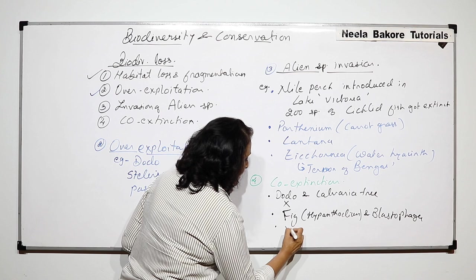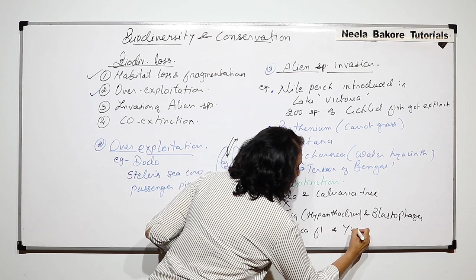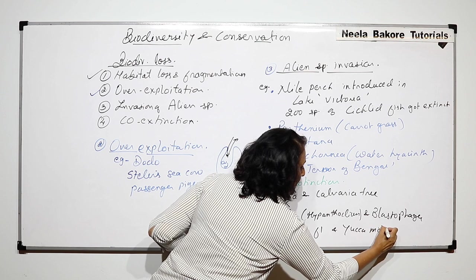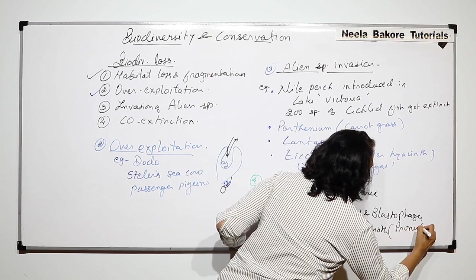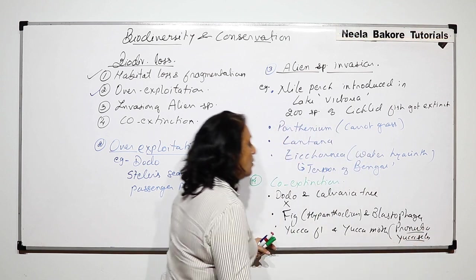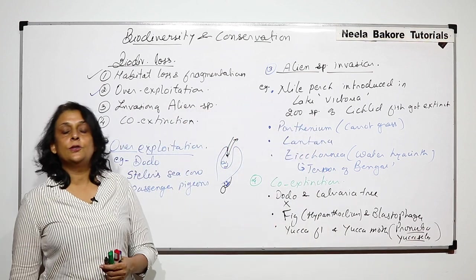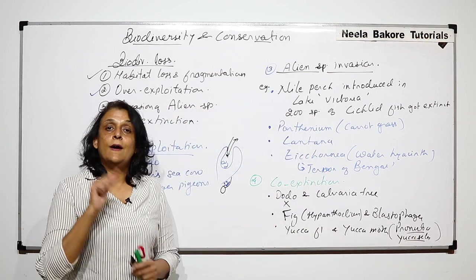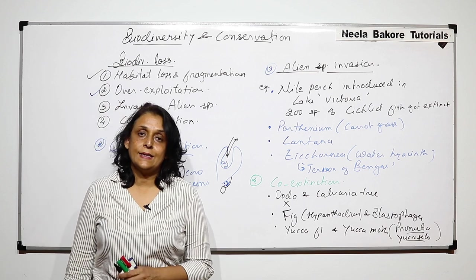One more example is yucca flower and yucca moth. This yucca moth is Pronuba yuccasella. This moth and the yucca flower again have a relationship such that if one gets extinct, the other one will automatically be extinct.